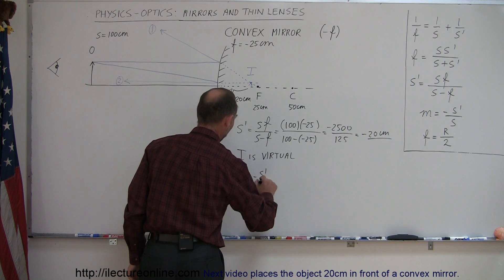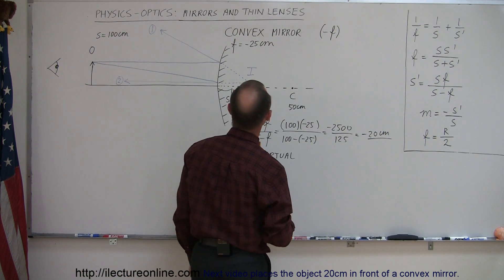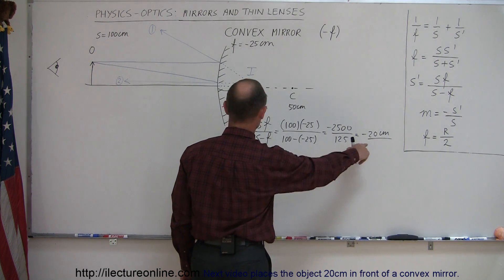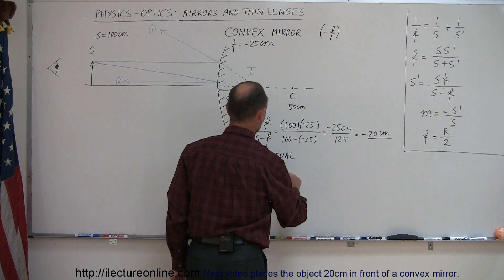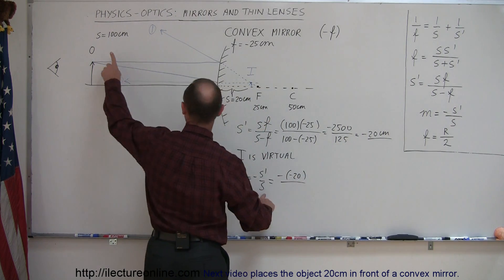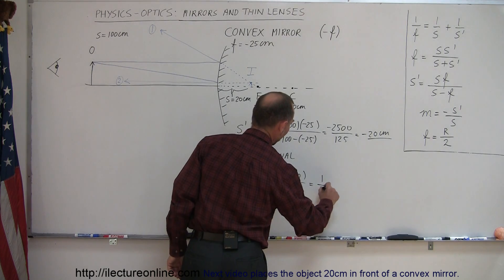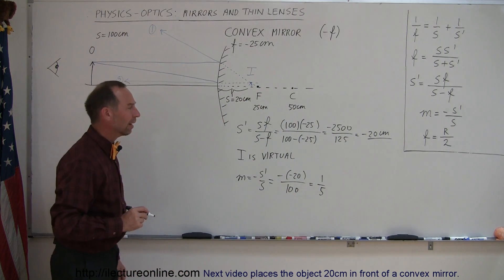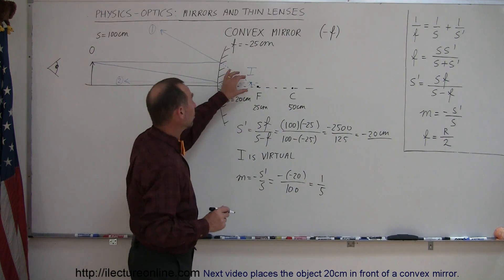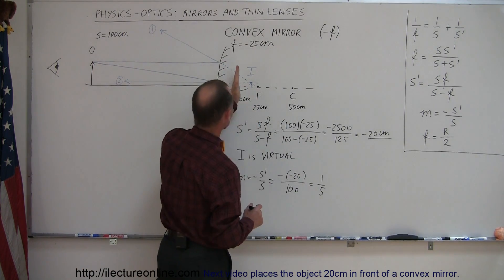And then the magnification can be found. M is equal to minus S prime over S, and S prime is the distance to the image, so minus times the minus 20 centimeters divided by S, which is distance to the object, which is 100, and so that's equal to 1 over 5. A positive 1 over 5, so it means that the image is only one-fifth the size of the object, and since it's positive, that means the image is upright.